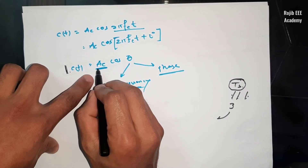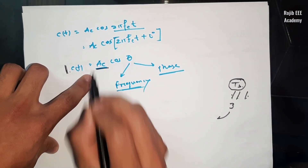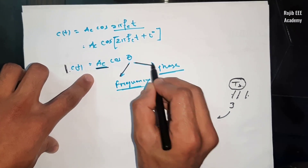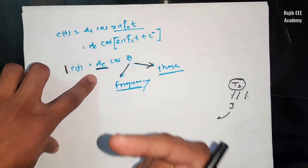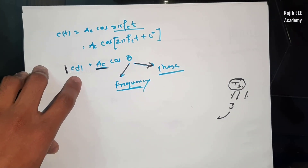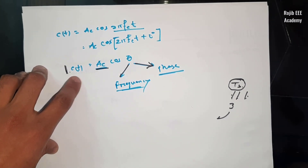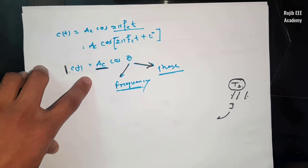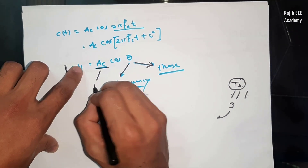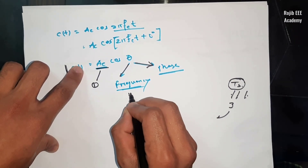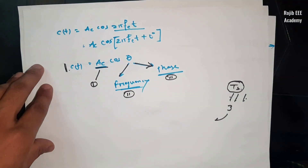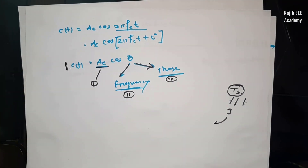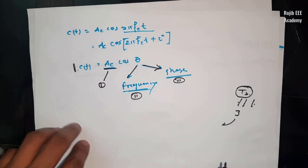The carrier has three parts: amplitude, frequency, and phase. So I will add a message to a carrier for wireless transmission. We can vary one of these three parts — amplitude, frequency, or phase — to embed the message. Through these three parameters, we can perform modulation.